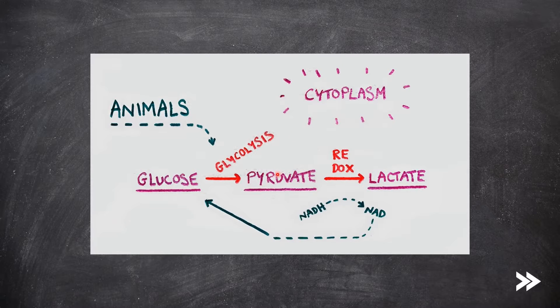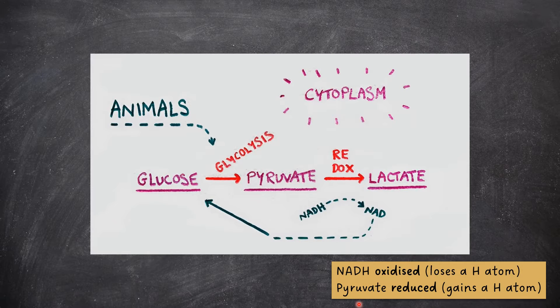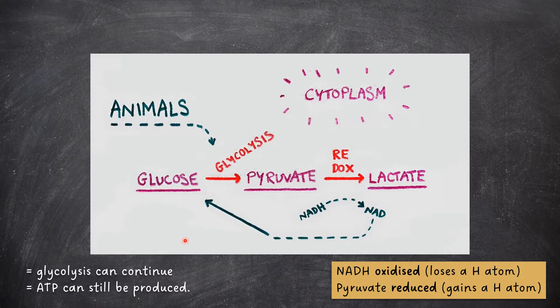In animals, the pyruvate that was produced from glucose in glycolysis is converted to lactate in a redox reaction with NADH. Pyruvate is reduced as it gains a hydrogen atom, and NADH is oxidized as it loses a hydrogen atom. This regenerates NAD, which can then be fed back into glycolysis. So, glycolysis can continue, meaning that ATP can still be produced.